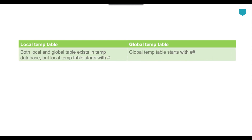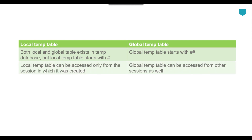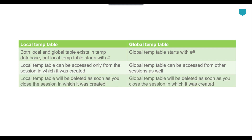Both the local temporary table and global temporary tables are created in the temp database on the SQL Server instance. The local temporary table starts with a single hash while the global temporary table starts with a double hash. A local temporary table can be accessed only from the session in which it was created, while a global temporary table can be accessed from other sessions as well. Both will be deleted as soon as you close the session in which they were created.